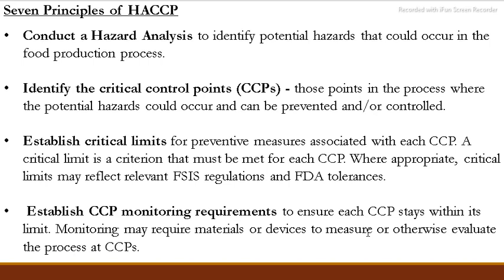The critical limit is what we follow up for every critical control point. When the appropriate critical limit is set for a control point, regulations and tolerances from agencies such as FSIS — Food Safety and Inspection Services — and FDA — Food and Drug Administration — provide the rules and limits set for each critical control point and preventive measure.